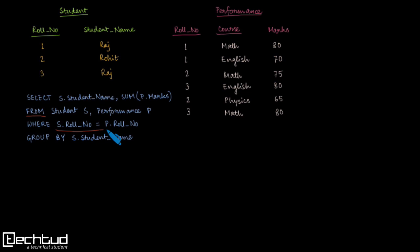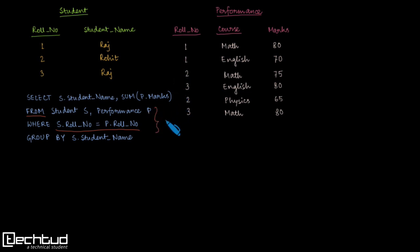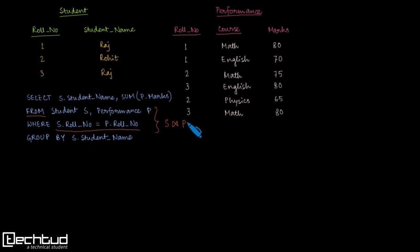We have a WHERE condition that matches the roll number from both tables. That will ensure that we get a natural join between the Student table and the Performance table. So from the FROM clause we get the Cartesian product, and then the WHERE clause gives you the natural join.